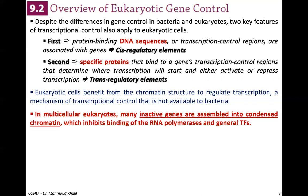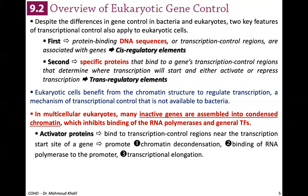In multicellular eukaryotes, many inactive genes are assembled into condensed chromatin, which inhibits the binding of RNA polymerase and general transcription factors. There are activated proteins that bind to the transcriptional control region — the cis-regulatory elements near the transcription start site of a gene — and promote chromatin decondensation, opening and exposing the DNA sequence. This eventually leads to RNA polymerase binding to the promoter, and then transcription initiation and elongation.